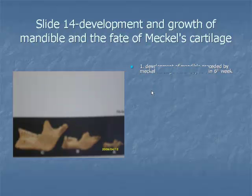Item 1: The development of the body of the mandible, that is, the horizontal mandible, is preceded by Meckel's cartilage, belonging to the first branchial arch. It acts merely as a scaffold around which the bone of the mandible forms, but does not take part in its formation.